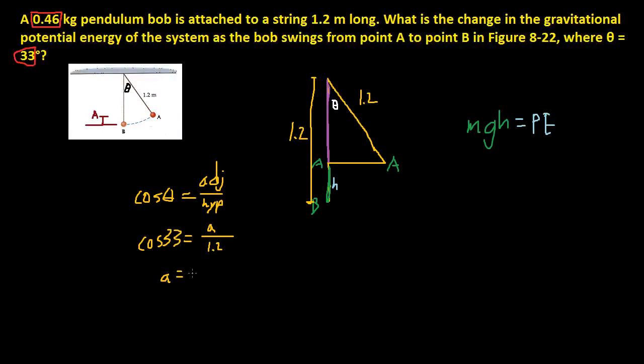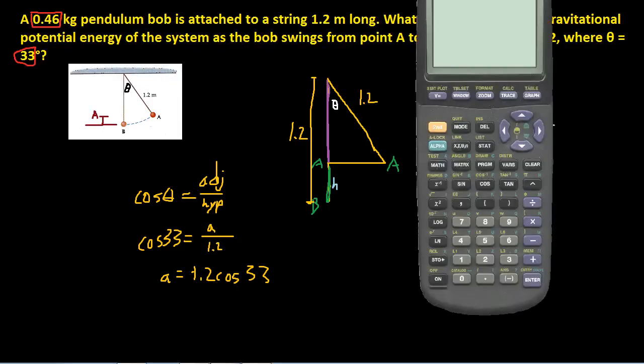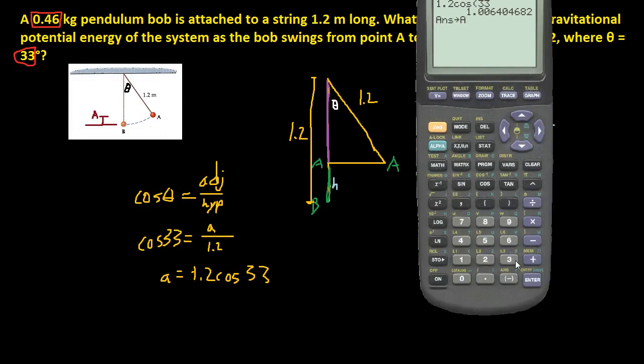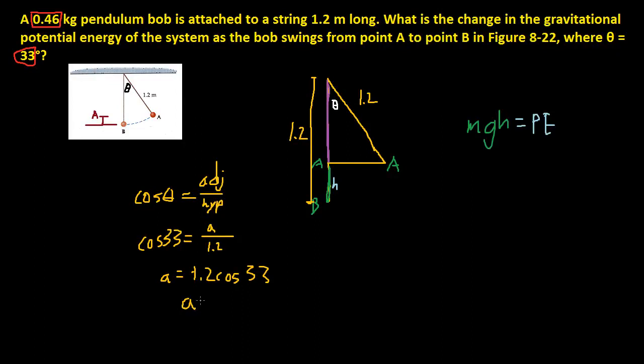Just note that while you're watching this, these numbers might be different for you. So cosine 33 is equal to adjacent, which we're trying to figure out, over hypotenuse, which is 1.2. So adjacent is just simply 1.2 times cosine of 33, because we multiply 1.2 on each side. So if we use our calculator to figure that out, 1.2 times cosine of 33, and make sure you're in degree mode, we get A. So I'm going to store this to A because that's the adjacent. So A is equal to 1.